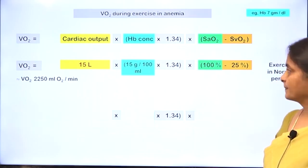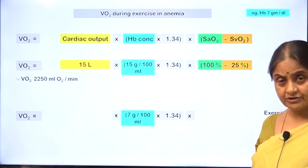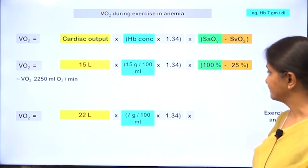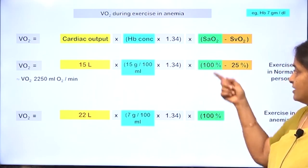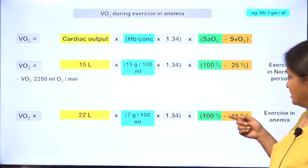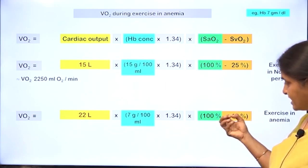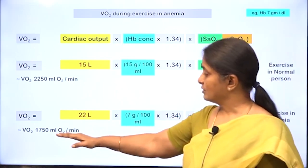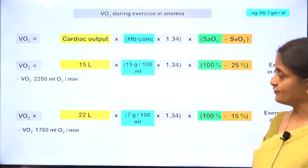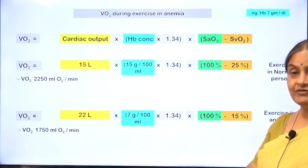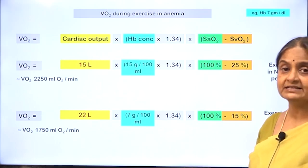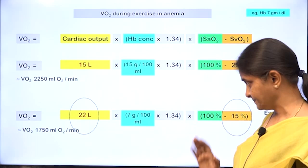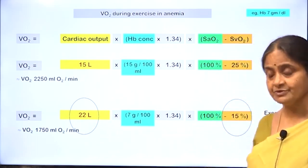In anemia, say there is only half the normal amount of hemoglobin. Cardiac output can increase as a compensatory mechanism. Arterial oxygen saturation is already 100%, and venous oxygen saturation can fall as tissues extract more from what is available. With these two compensatory mechanisms, an oxygen consumption of about 1,750 ml per minute can be achieved — the level of exercise an anemic individual can manage. In resting conditions, there will not be tissue hypoxia because these compensatory mechanisms take over.